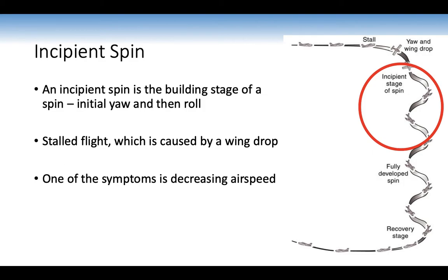An incipient spin is the building stage of a spin — initial yaw and then roll. It's a stalled flight caused by a wing drop if you don't let it recover, and the symptom is decreasing indicated airspeed. We won't be practising it in this lesson, but this is what would occur if you don't recover early on. Incipient means the starting off stage.